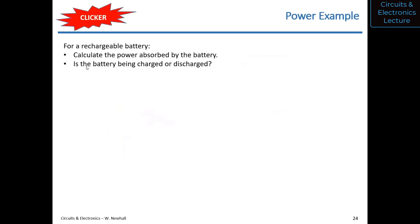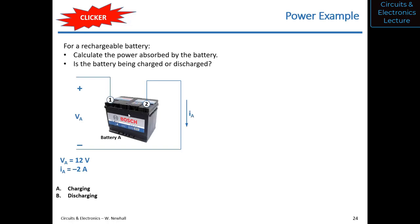Let's try a clicker problem. You have a rechargeable battery — a rechargeable battery can absorb power or supply power. Determine the power for the rechargeable battery and determine whether the battery is being charged or discharged. You take a voltmeter and measure voltage VA between the terminals, and you put an ammeter in the wire and measure IA.